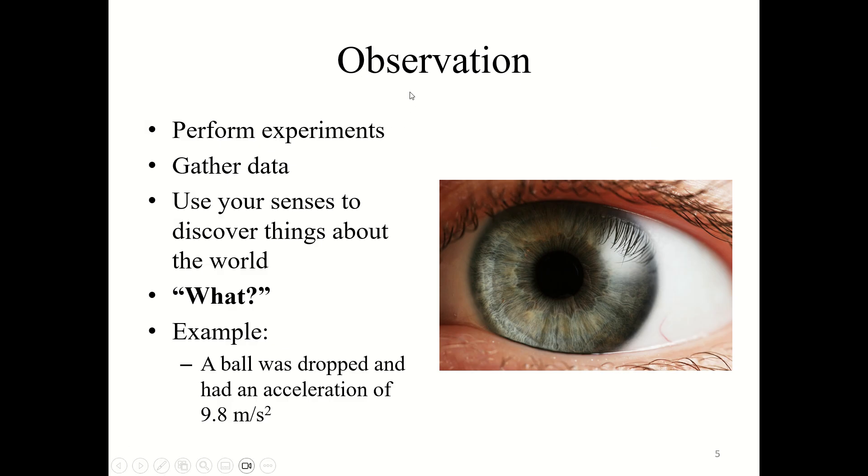First, let's briefly explain what we mean when we say observation. An observation can be qualitative or it can be quantitative. We can perform experiments, gather data, or we can use our senses to discover things about the world. An observation asks what just happened. For example, a ball was dropped and had an acceleration of 9.8 meters per second squared. This is an observation, a very quantitative observation. If I had a ball in my hand and I dropped it, a qualitative observation would be when I let go of the ball, the ball drops to the floor. That describes what happened, but it's just generally qualitatively describing what happened.